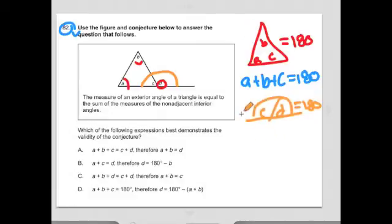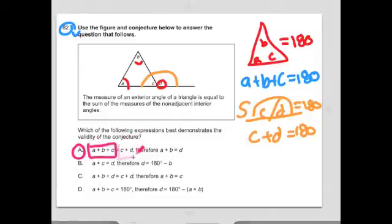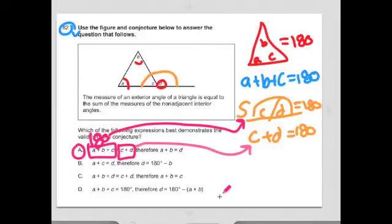And we call those, what do we call those? We call those supplementary angles. So I could say C plus D equal 180 degrees. They form a straight line or a straight angle. Now here's where you want to start looking at these answer choices very carefully. They're all very tricky. So what I want you to do is just focus on the correct answer, which is A. And the A says A plus B plus C equals C plus D. Now we know that A plus B plus C is 180. We just talked about that right here. And we also know that C and D, supplementary angles that form a straight line, are also 180.